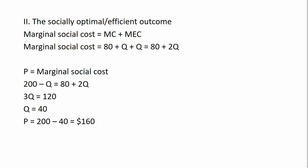In step two, we're going to look at the socially optimal or efficient outcome. The socially optimal outcome takes into account all the relevant costs of production, not only the private cost but the marginal external cost. To get the marginal social cost curve, we take our MC equation and add to it the MEC equation. Adding those up, we get 80 plus 2Q.